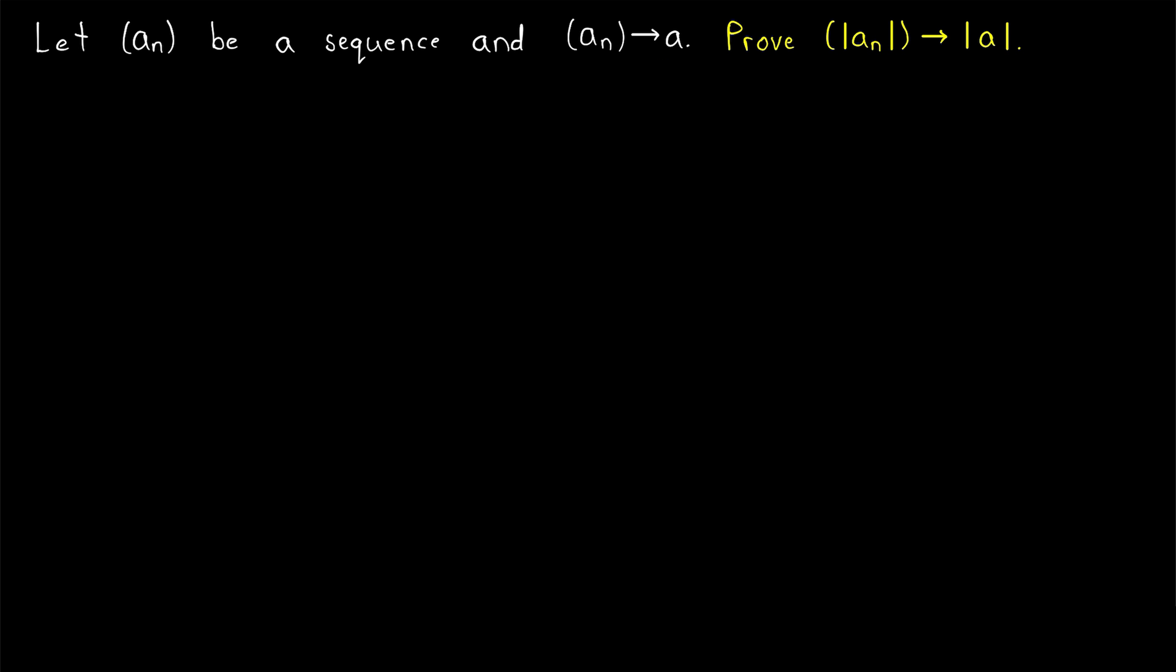We want to prove that the sequence consisting of the absolute values of the terms of An converges to the absolute value of A. So roughly speaking, the absolute value of a convergent sequence converges to the absolute value of the limit.